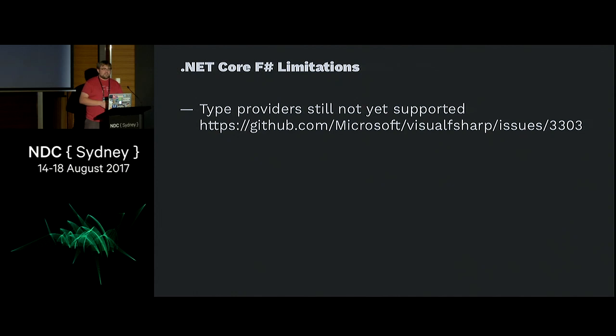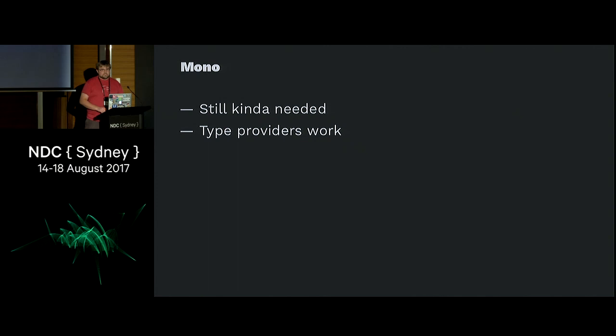Some limitations in .NET Core at the moment for F-sharp: you don't have type providers — you have to compile them with MSBuild, which basically means using Mono on Mac to compile anything that needs a type provider. They're promising this should be added sometime in .NET Core 2, hopefully before .NET Core 2.1. As we saw with the debugger, Mono is still needed for a few things, so the tooling is getting there. And that's all you need to get F-sharp going on a Mac. Any questions? .NET Core makes it really simple.